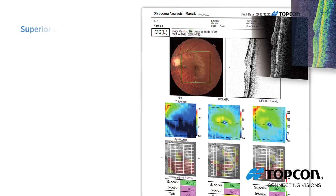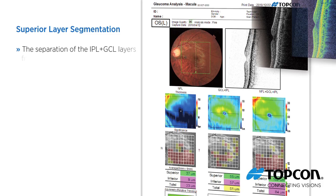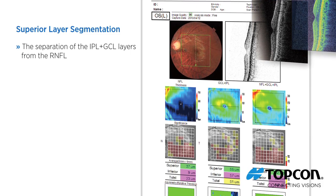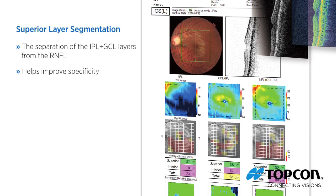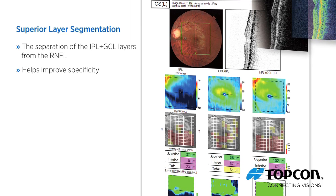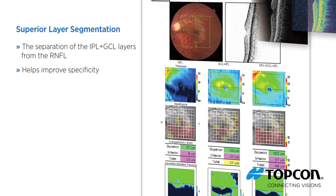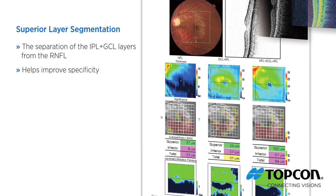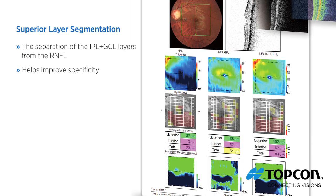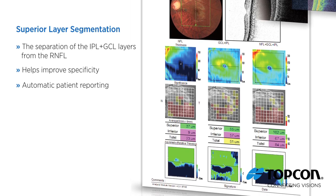The TopCon 3D OCT 2000's superior layer segmentation allows for the separation of the IPL and GCL layers from the RNFL. This helps improve the specificity over just reviewing NFL and IPL and GCL when analyzing the ganglion cell layers. Thickness maps, analysis of average thickness, asymmetry maps, as well as a normative database are automatically reported for you to assess your patient.